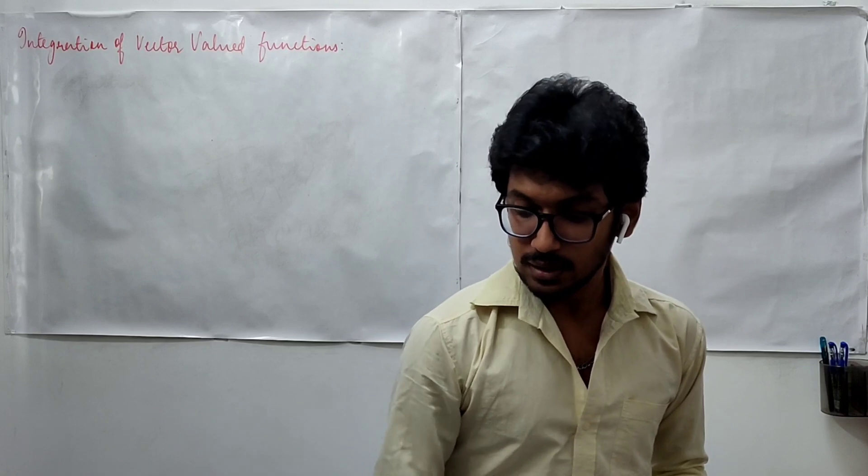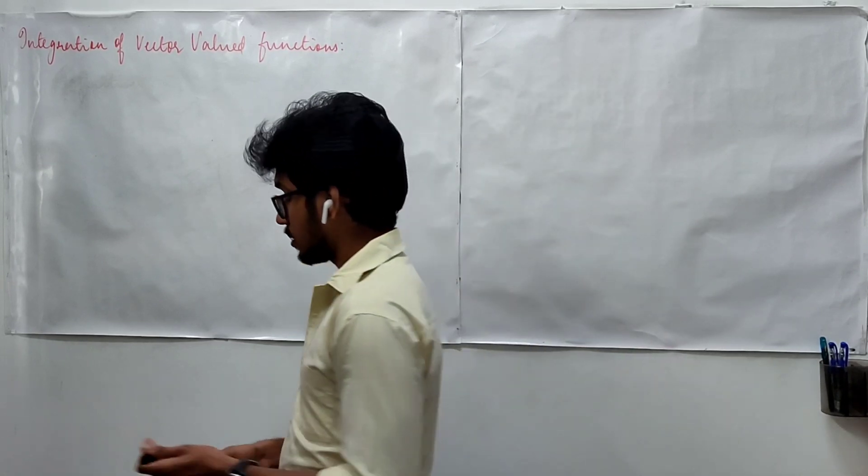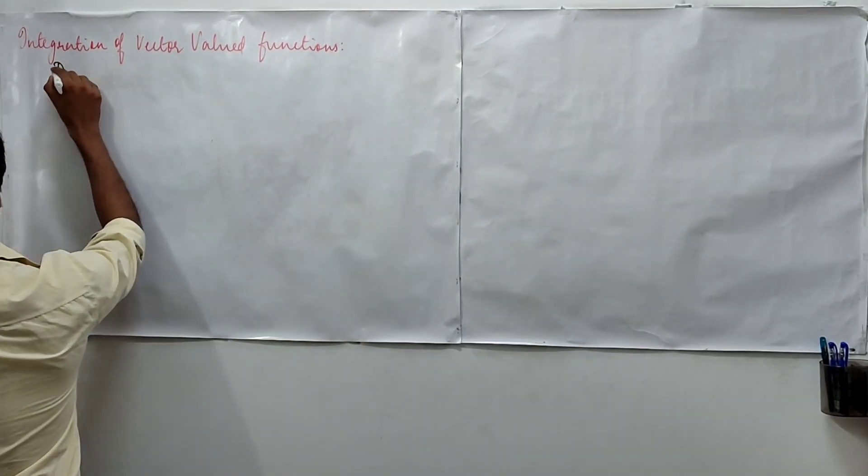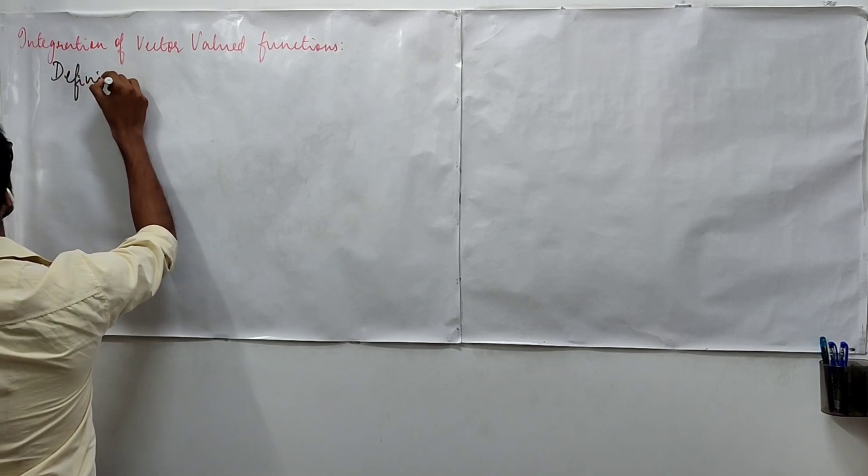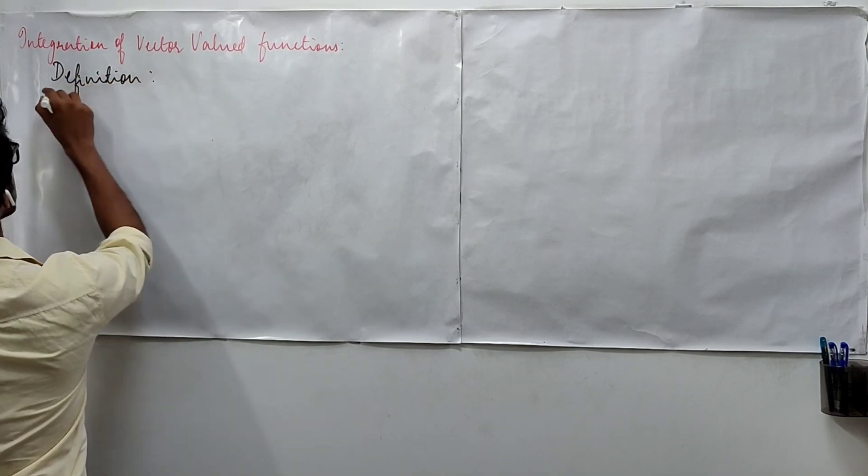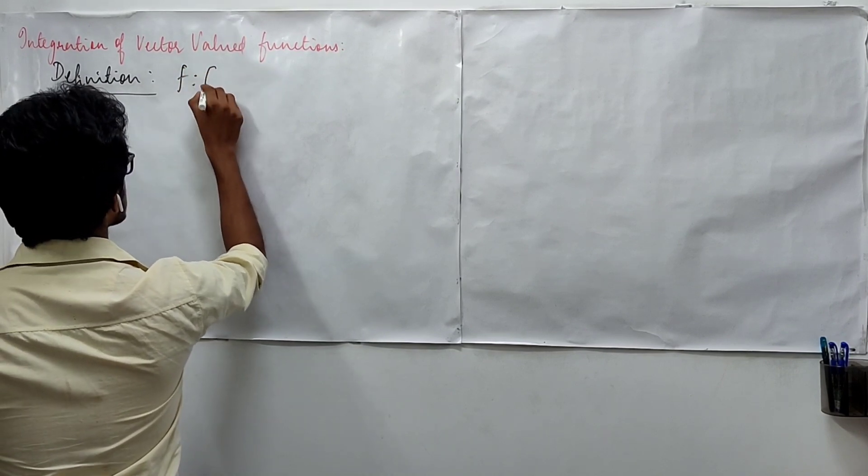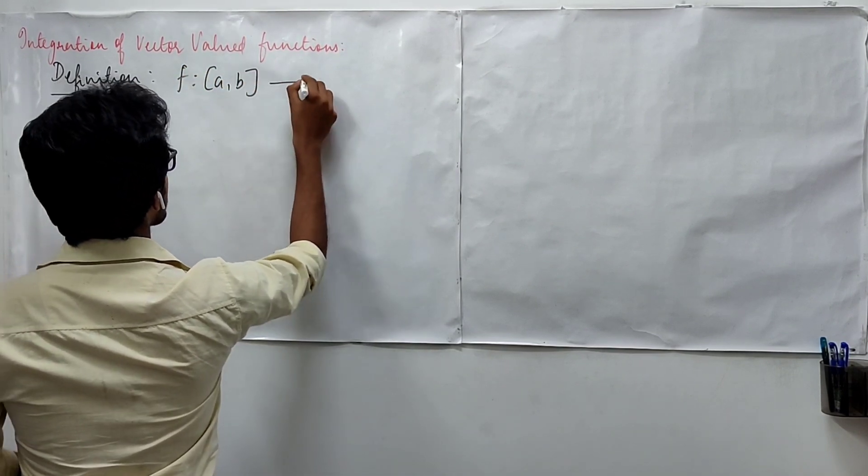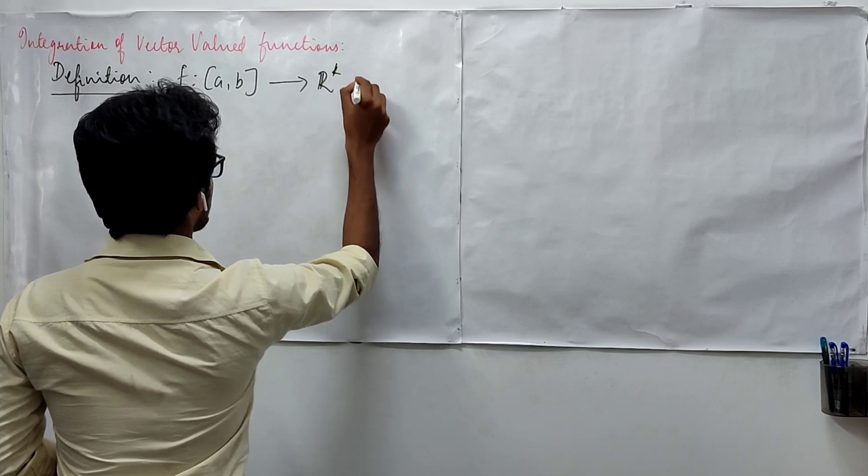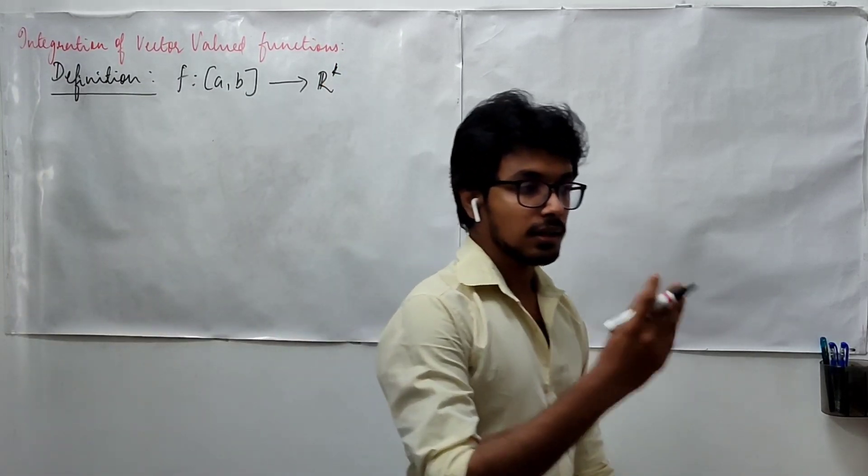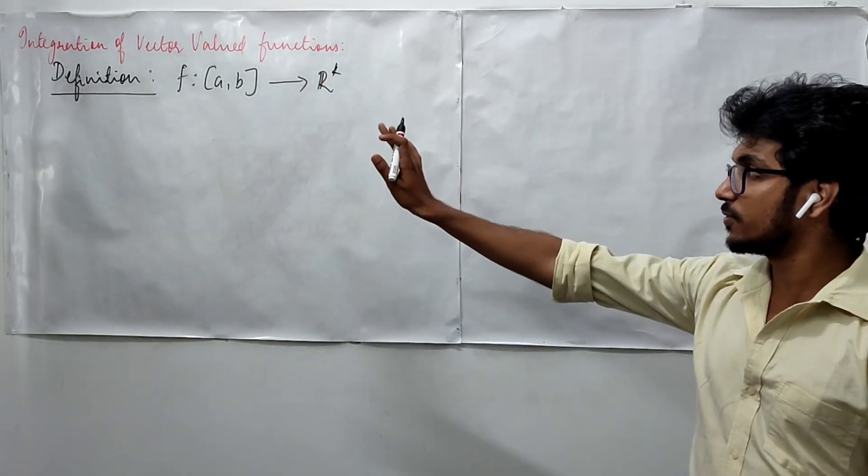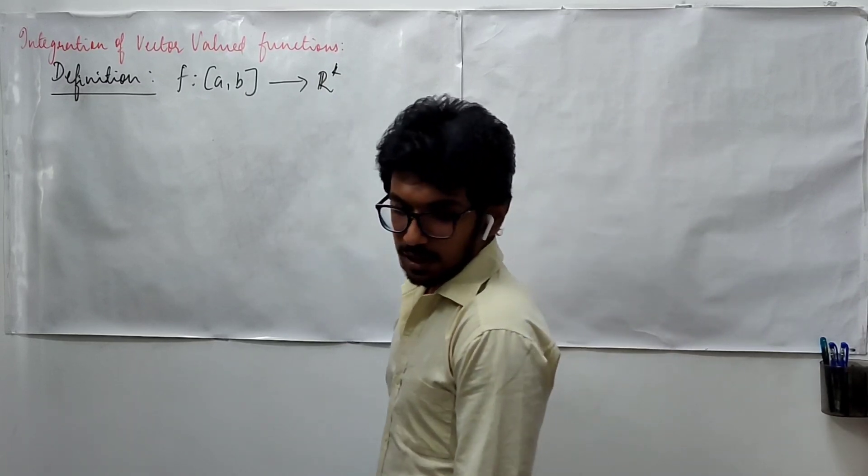Let us begin with the definition of this idea. So, here let us consider some function f which is defined from the closed interval [a,b] into R^k. R^k means this function f is a vector valued function.